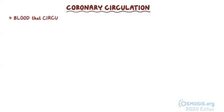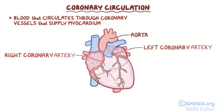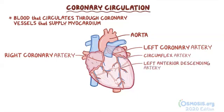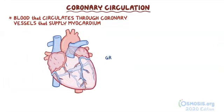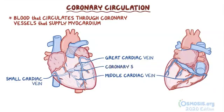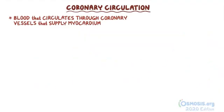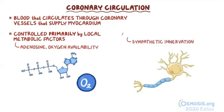As a quick recap: coronary circulation is the blood circulating throughout the coronary vessels that supply the myocardium. The coronary arterial circulation starts at the base of the aorta with the left and right coronary arteries. The left coronary artery gives off the circumflex artery and the left anterior descending artery; the right coronary artery gives off the marginal artery and the posterior descending artery. The cardiac veins — the great cardiac vein, middle cardiac vein, and small cardiac vein — drain into the coronary sinus and ultimately into the right atrium. Blood flow through the coronary circulation is primarily controlled by local metabolic factors like adenosine and oxygen availability, with sympathetic innervation playing a minor role.